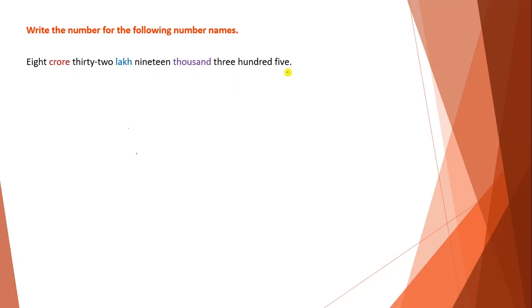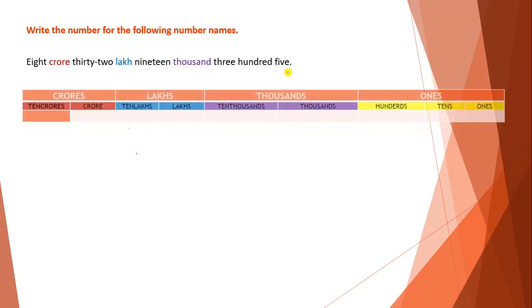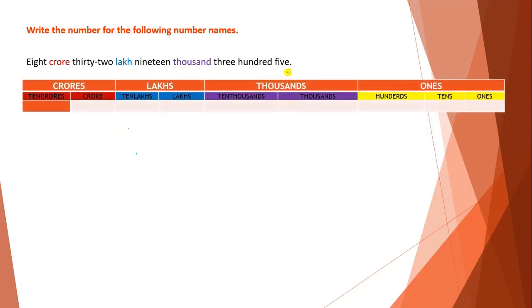Here I have drawn an Indian place value chart table with the periods as: Ones, Thousands, Lakhs, Crores. Below that I wrote the place names as: Ones, Tens, Hundreds, Thousands, Ten Thousands, Lakhs, Ten Lakhs, Crore, and Ten Crore. Now we will write the digits according to periods.